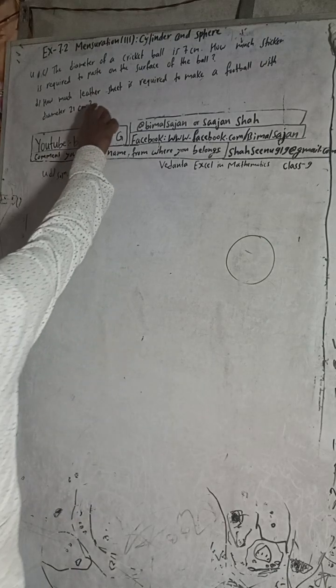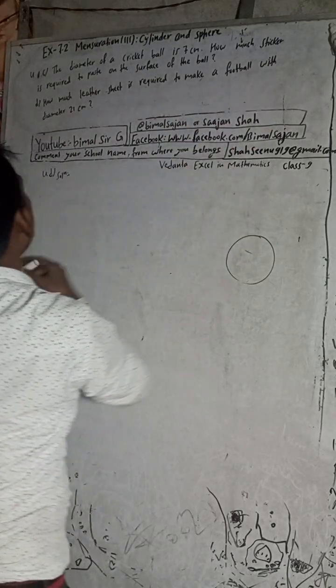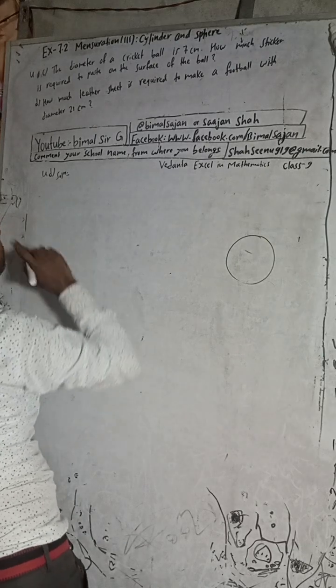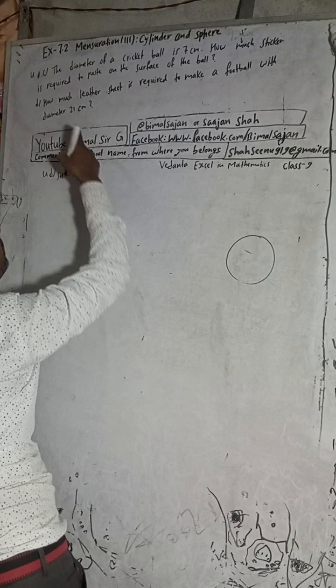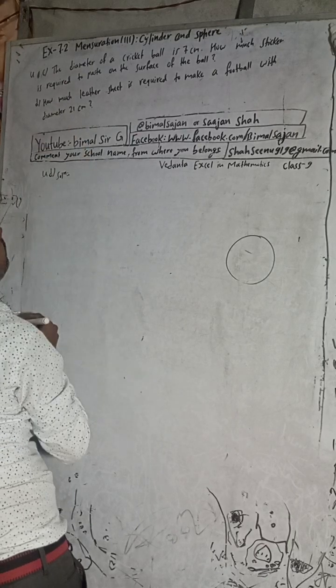Hi class 9 and 10 students, welcome back to Bimal Sarji's YouTube channel. This is question number 4D, exercise 7.2, mensuration — cylinder and sphere. Check the playlist for many more solutions. The question is: how much leather sheet is required to make a football with diameter 21 cm?